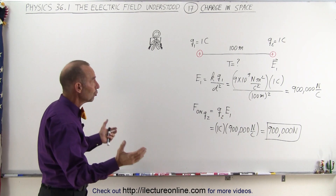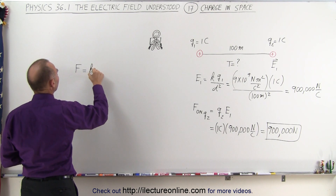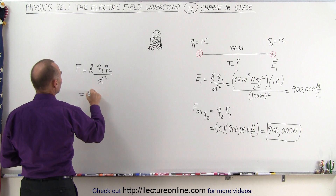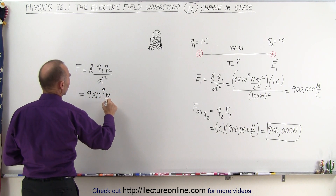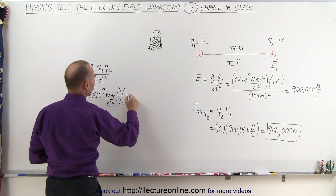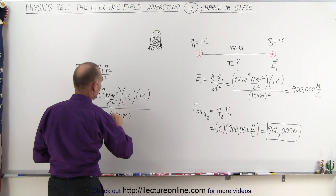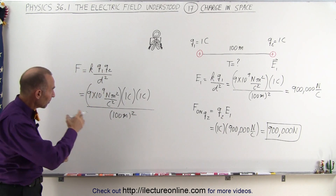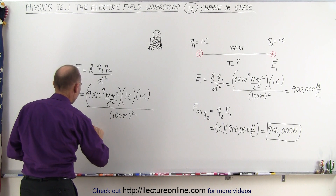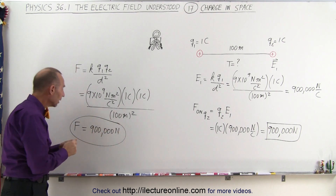Now how does that work if we use Coulomb's law? Using Coulomb's law, the force between the two charges is equal to K times Q1 Q2 divided by the distance squared. So this would be 9×10⁹ Newton meters squared per Coulomb squared, times Q1 of 1 Coulomb times Q2 of 1 Coulomb, divided by 100 meters quantity squared. The Coulombs cancel out, the meters squared cancel out, and 9×10⁹ divided by 10,000 also gives us 900,000 Newtons.